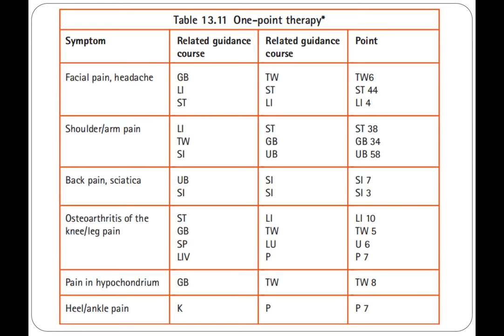For back pain and sciatica, the related guidance courses are the urinary bladder and small intestine, with points Small Intestine 7 and Small Intestine 3. For osteoarthritis of the knee and leg pain, the courses include stomach, gallbladder, spleen, liver, LI, triple warmer, lung, and pericardium — points LI10, Triple Warmer 5, UB6, and Pericardium 7. For pain in the hypochondrium, the related courses are gallbladder and triple warmer, using point Triple Warmer 8. For heel and ankle pain, the courses are kidney and pericardium, using point Pericardium 7.